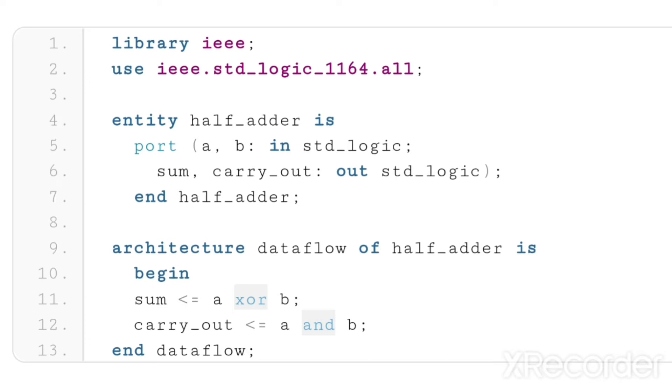Since our example is a half adder, which is a device that adds two single bits, A and B are the inputs, and sum and carry_out are the outputs.